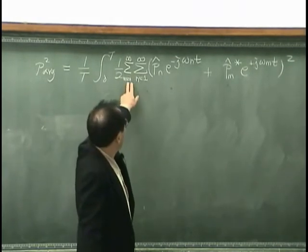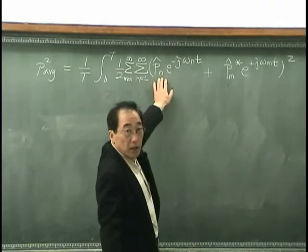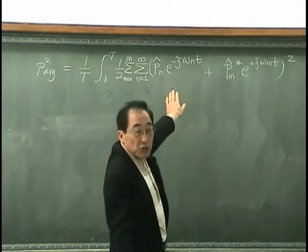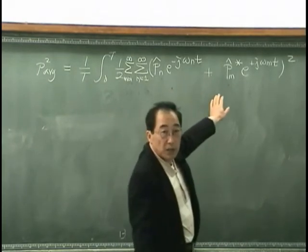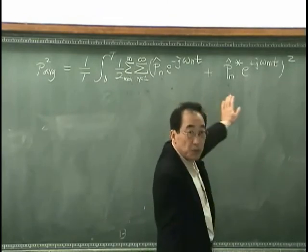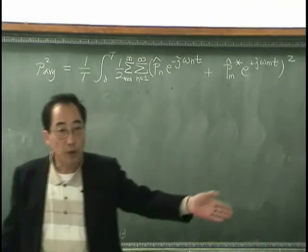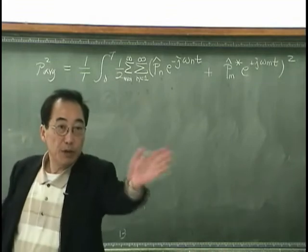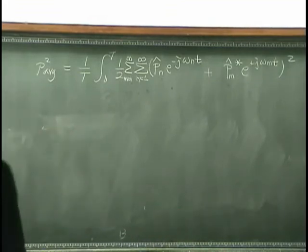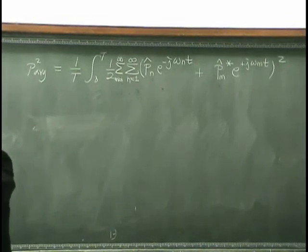Suppose, m equals one, and n is varying. Then this is one, this is varying. If I square this, then first the term is p1 square, and the second p1 square. And then, the other one is p1 multiplied p2, p1 multiplied p3, p1 multiplied p4, I can go forever, p1 multiplied p5, p1 multiplied p6.